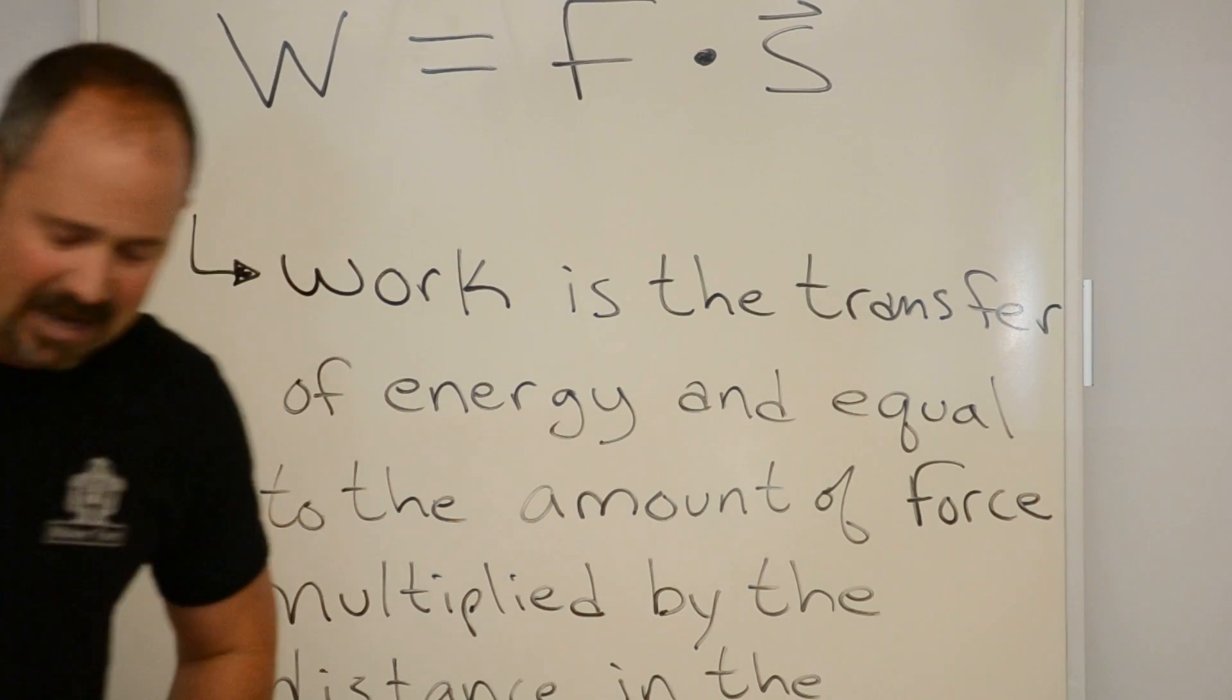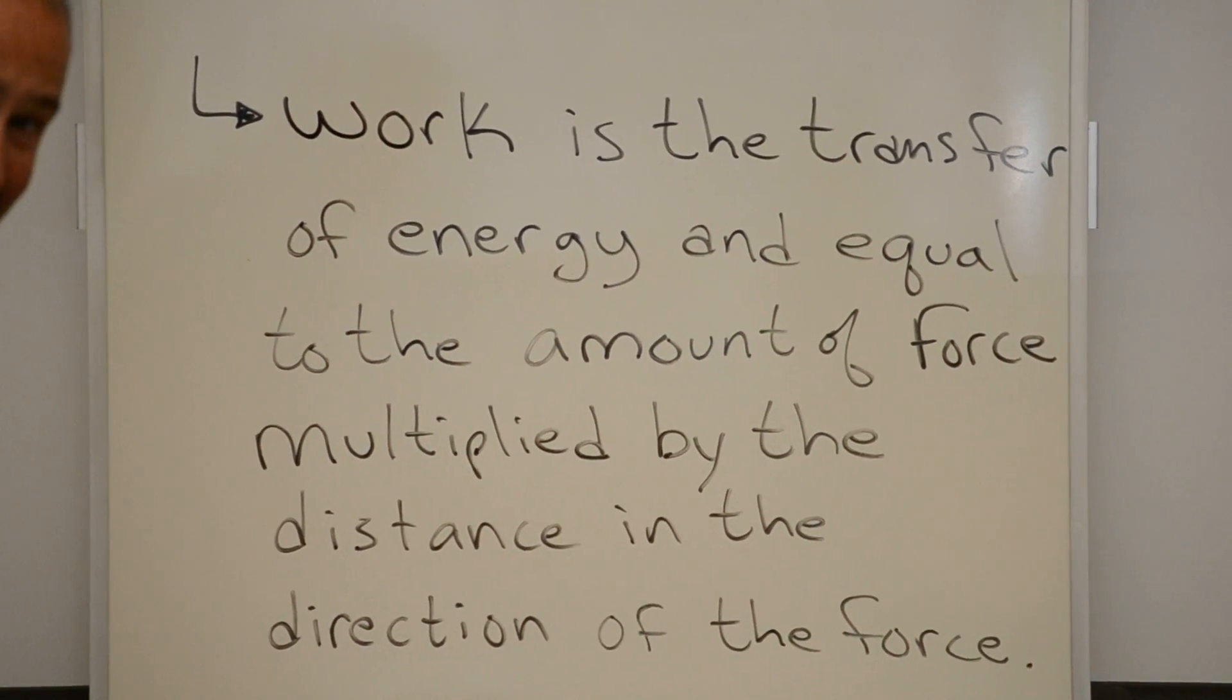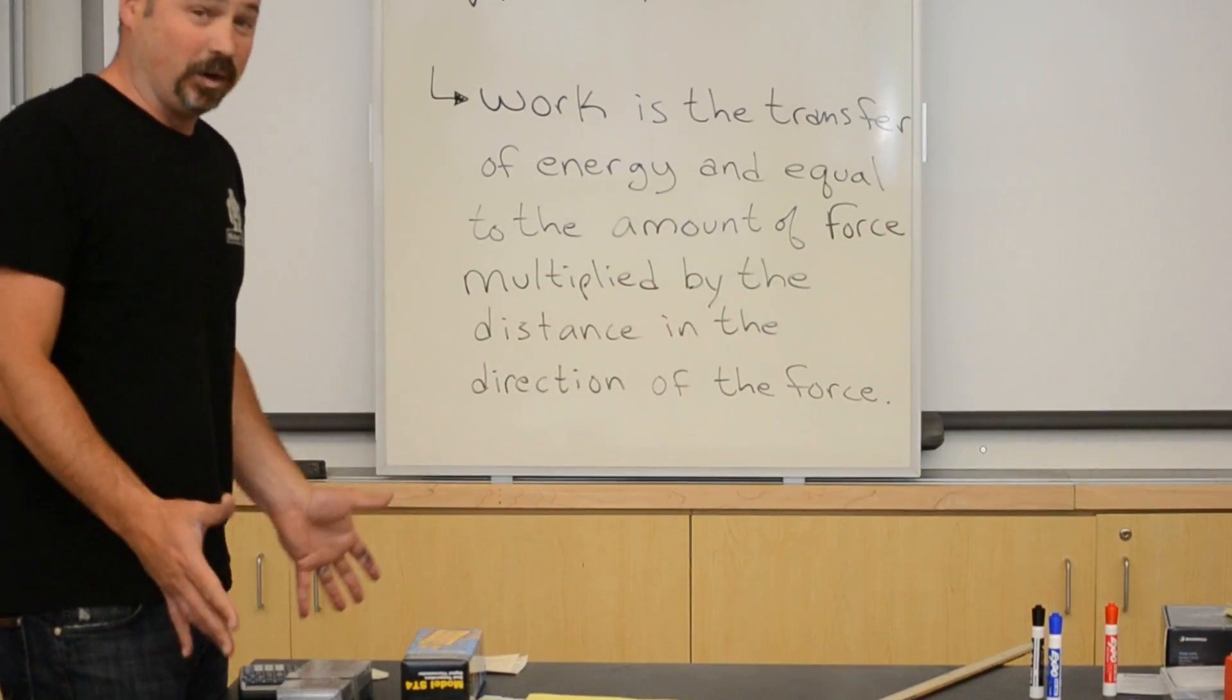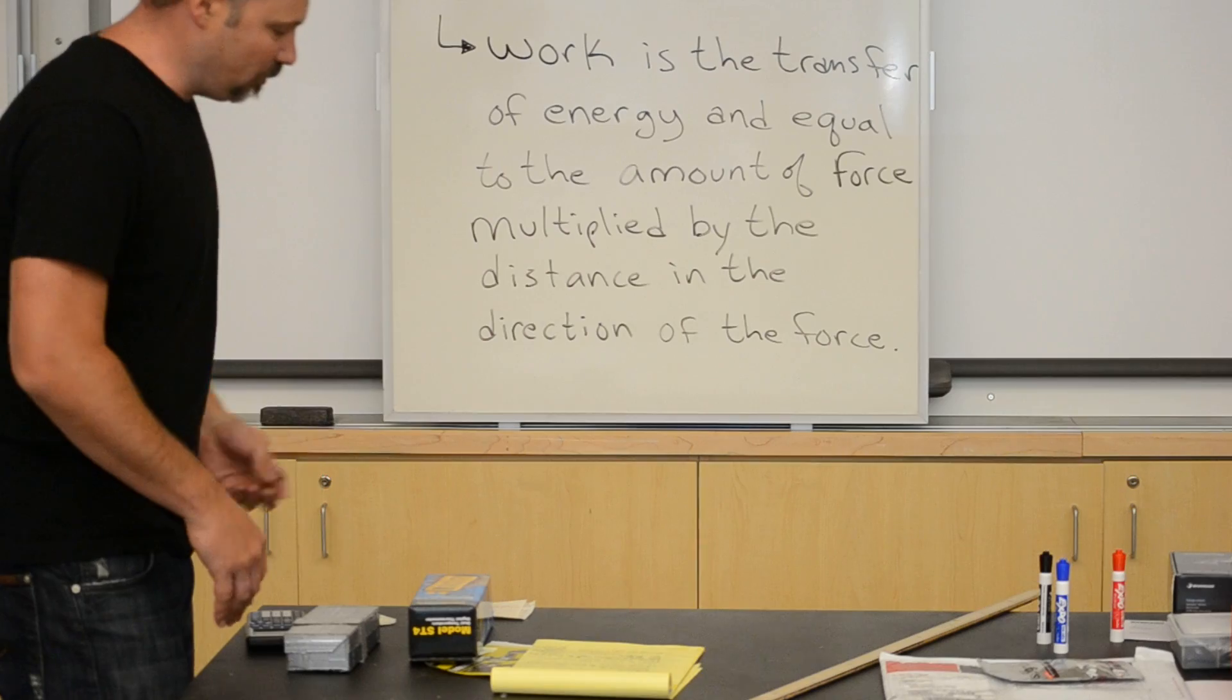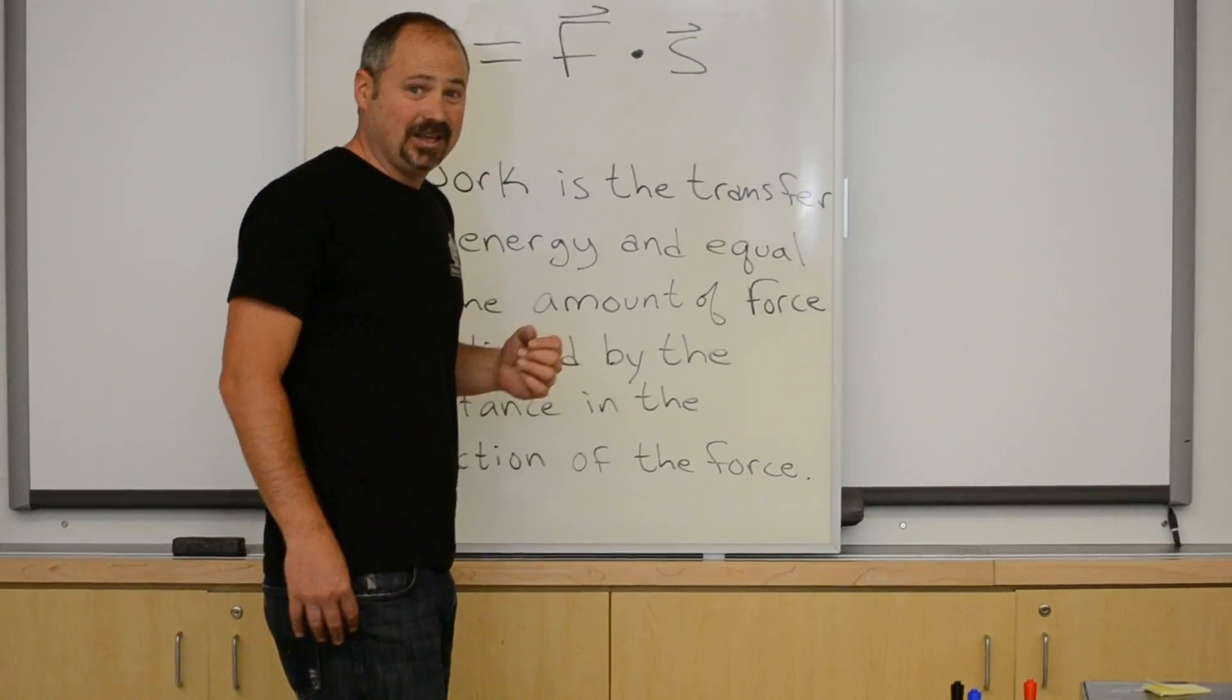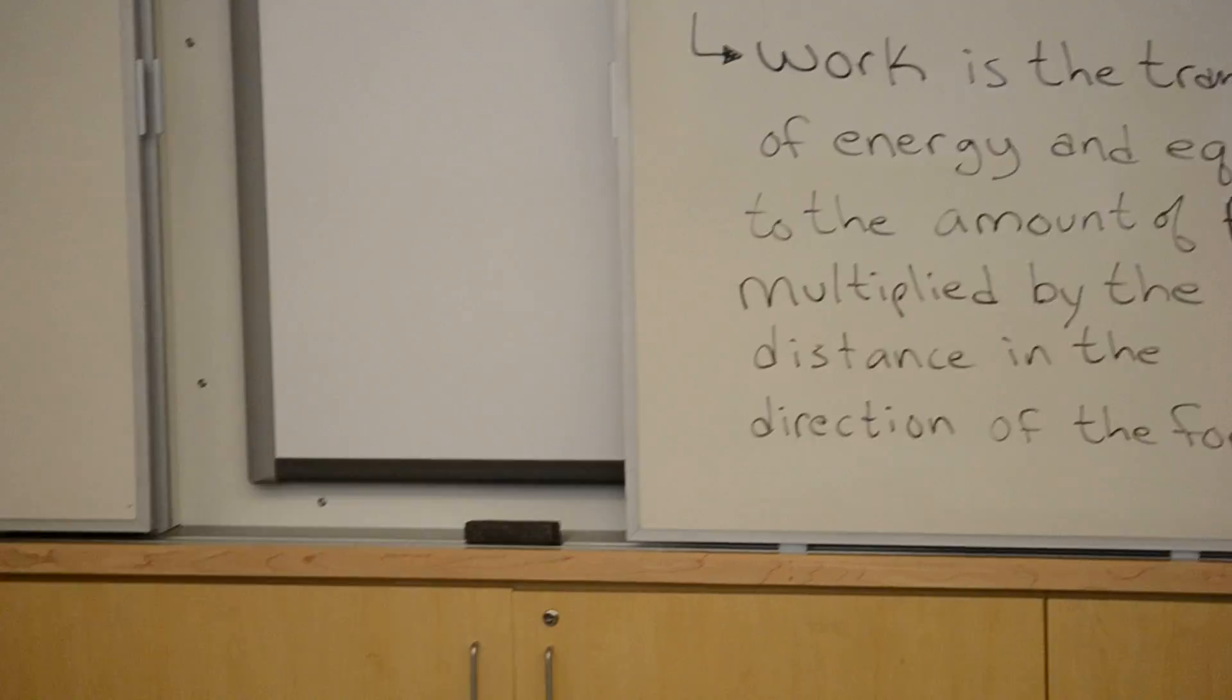So, for example, if I pull this table straight up, I'm clearly applying a force. However, my force is upward and I'm trying to move the table this way. So, while I have the value for the force, I don't have any dot product value. The work is zero because it has not been moved.